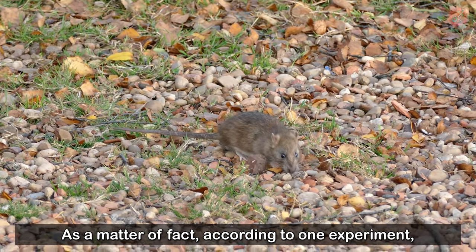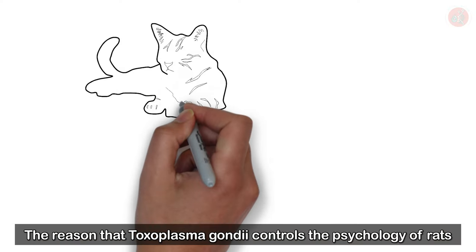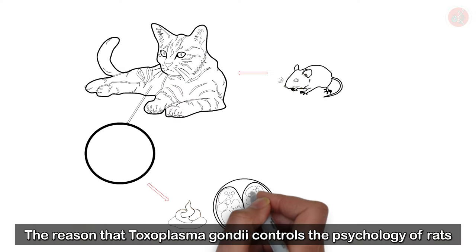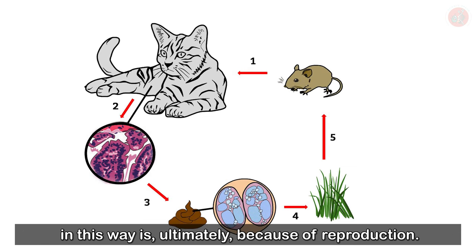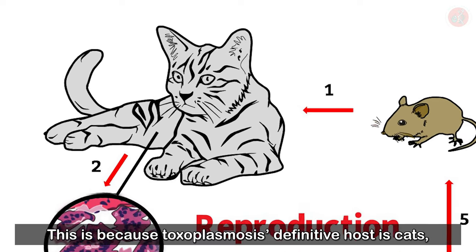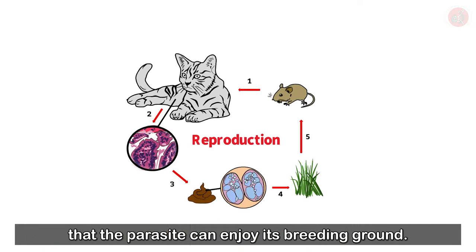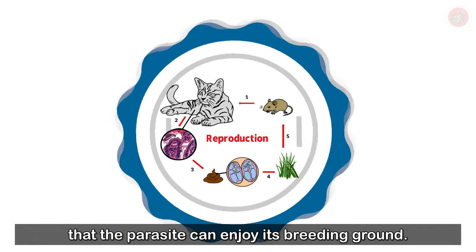As a matter of fact, according to one experiment, they spend more time in rooms smelling of cat urine. The reason that Toxoplasma gondii controls the psychology of rats in this way is ultimately because of reproduction. This is because Toxoplasmosis' definitive host is cats, and it's only by making it easier for the cat to catch the rat that the parasite can enjoy its breeding ground.